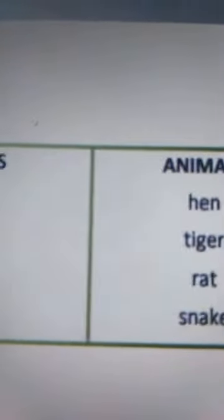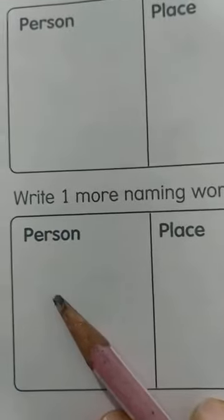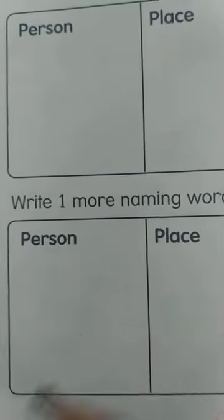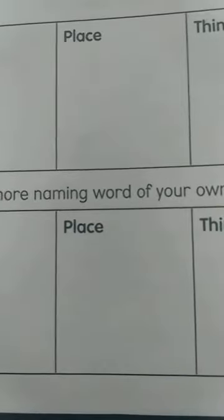People, place, things, animals. Write one more naming word of your own in each box. For people: daddy, mommy, teacher, gardener, postman — anything you feel like. For place: home, school, park, India, city — cities also you can write. For things: fruit. For animal: dog.